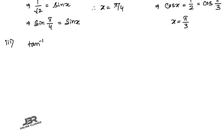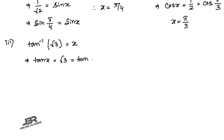Number 3: tan⁻¹(√3) = x, so tan x = √3. Since √3 = tan 60°, that means tan(π/3) = √3, therefore x = π/3.